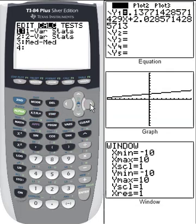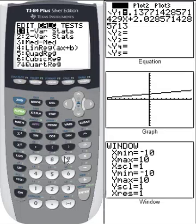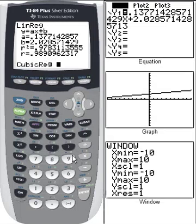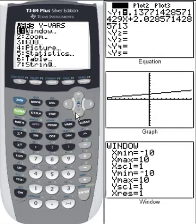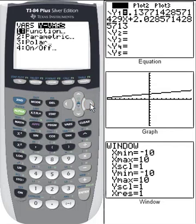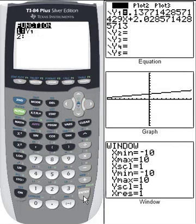So stat calc. Cubic is number 6. And then we're going to have it put in the next slot. So function. We're going to have it put in at y2.